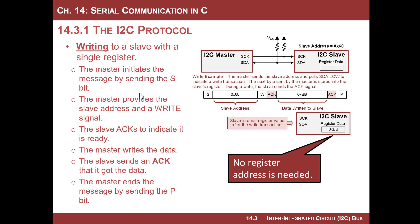Let's look at how you would write to something. The master initiates the message with a start bit, provides the slave address — let's use 68 as a real example — and says it's going to write. The slave ACKs, meaning "I'm 68 and I'm here." The master then sends the data, say BB, the slave ACKs, and the master sends a stop. Notice that with only one register, there's no need for a register address. If there were multiple registers you'd need to tell the slave whether to write to register 0 or register 7.